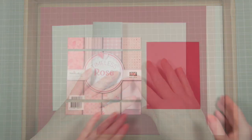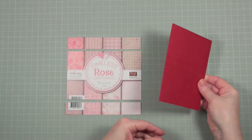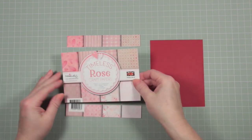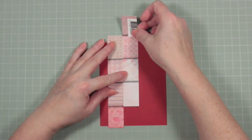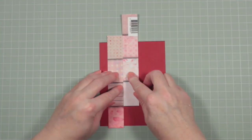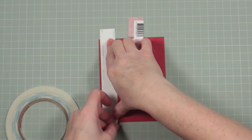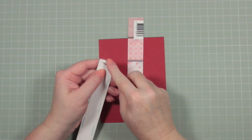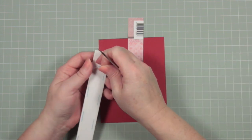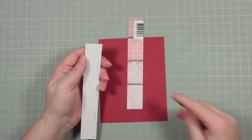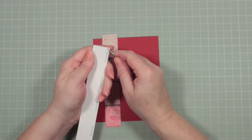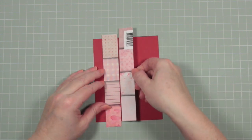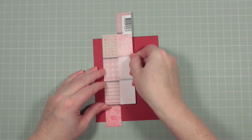For our first card I've cut a piece of the red cardstock down so that it's a standard card size and I've also cut two strips away from the front panel of the paper pack. I'm going to position these in such a way that the lines match up.